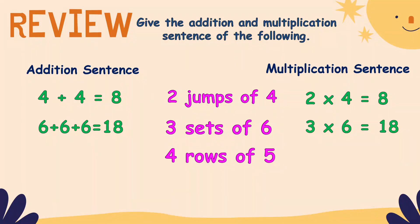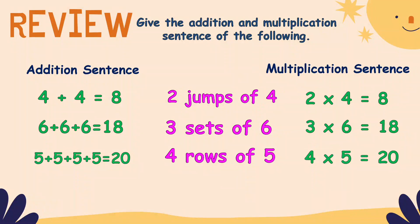Four rows of five. How many times are you going to add five? Four times. So five plus five plus five plus five equals 20. And the multiplication sentence is four times five equals 20.